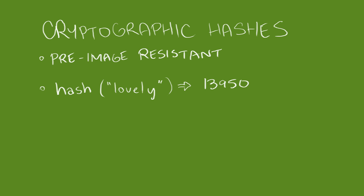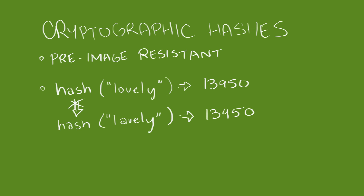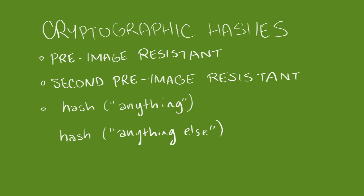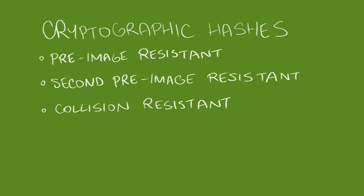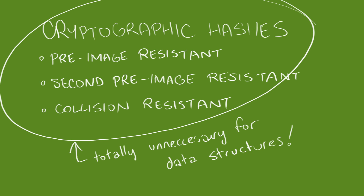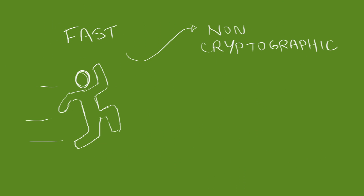Given an input and output, you can't find a nearby input with the same output — this is called second pre-image resistance. And finally, you can't find any two inputs with the same output. This is called collision resistance. While these properties are completely and absolutely necessary for security applications, they're completely unnecessary for data structures, and they come at a performance cost, so don't use cryptographic hashes for data structures.